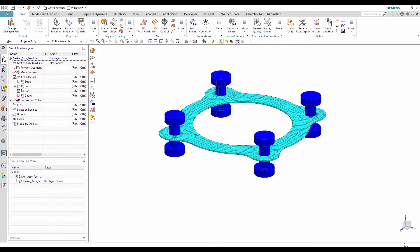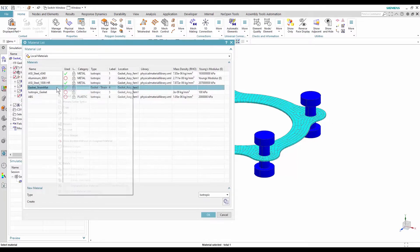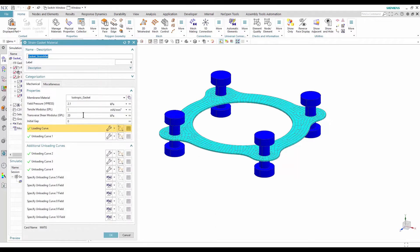In the material list, I select a gasket material which I already defined. The gasket is defined with a Mat-G card.